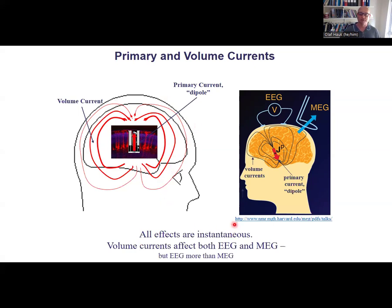Also important to say all effects are instantaneous. So whenever the battery changes, you immediately have a change in your signals. So sometimes we talk about brain waves, but there are no waves of that sort of traveling around the head. So we really measure the instantaneous signal changes of these dipolar sources. And as I already said, these volume currents affect both EEG and MEG, but EEG more than MEG.